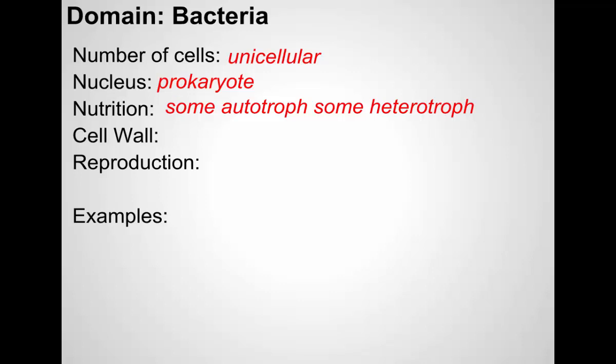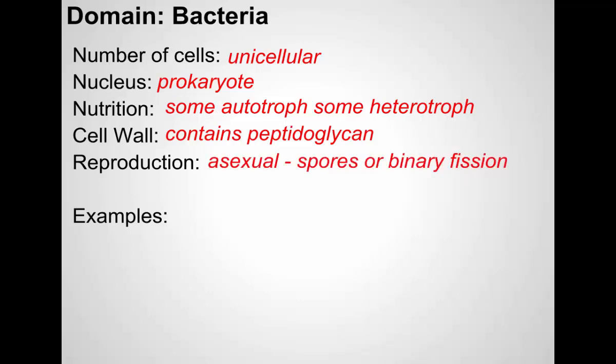Some bacteria, like blue-green algae — cyanobacteria — can go through photosynthesis. Others, like strep bacteria and E. coli, are heterotrophs; they have to consume other things for energy. Their cell wall contains a molecule called peptidoglycan, which is a different type of cell wall from a fungus or a plant cell. Even though they often have a cell wall, the bacterial cell wall is unique. Bacteria can reproduce asexually through producing spores or through binary fission. They can also exchange genetic material in a process called conjugation.